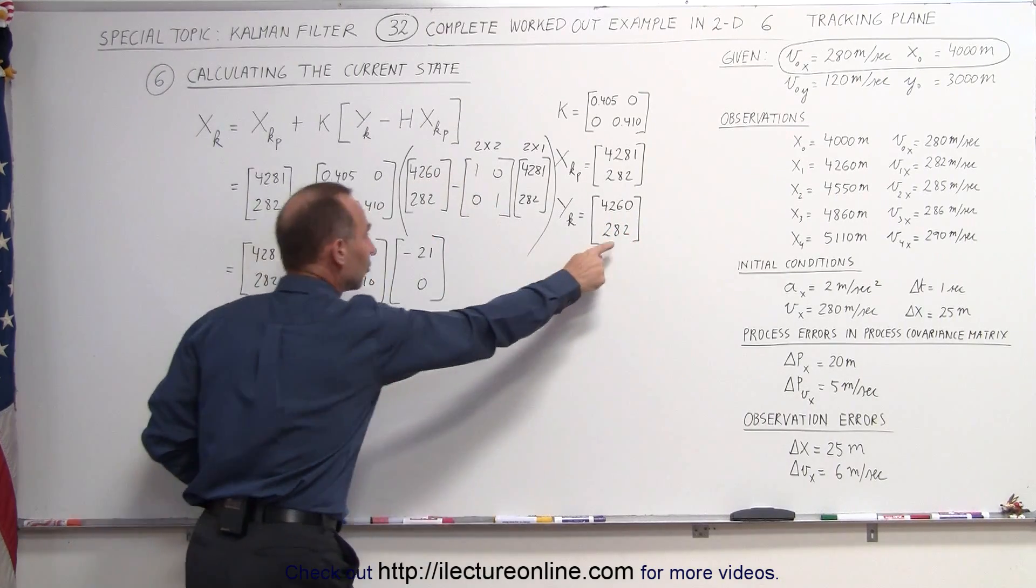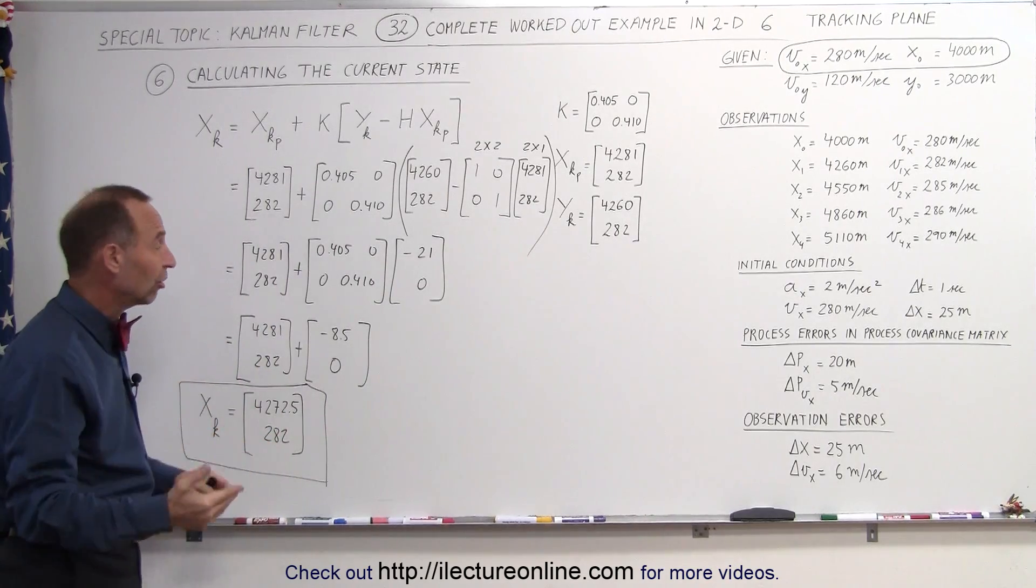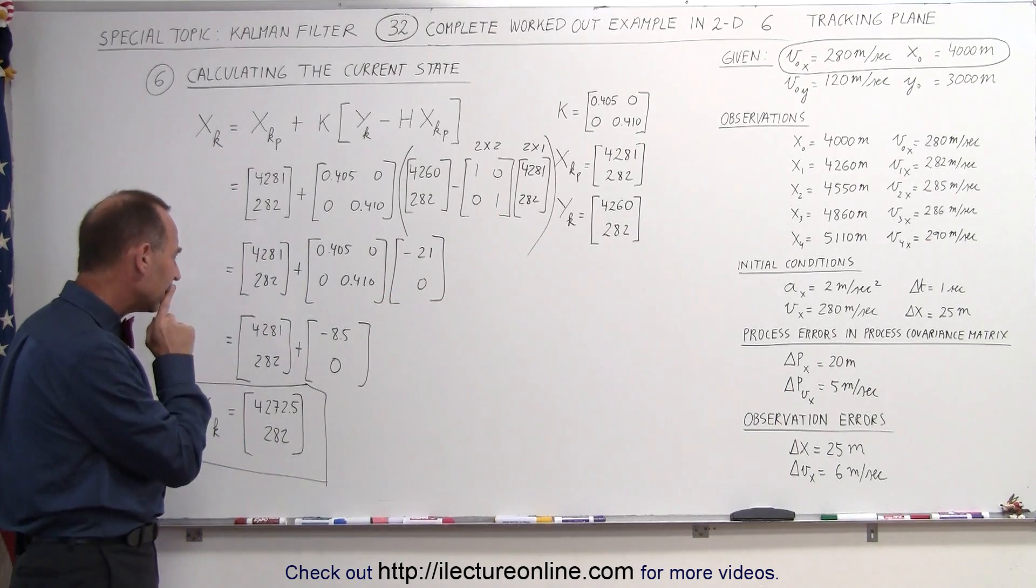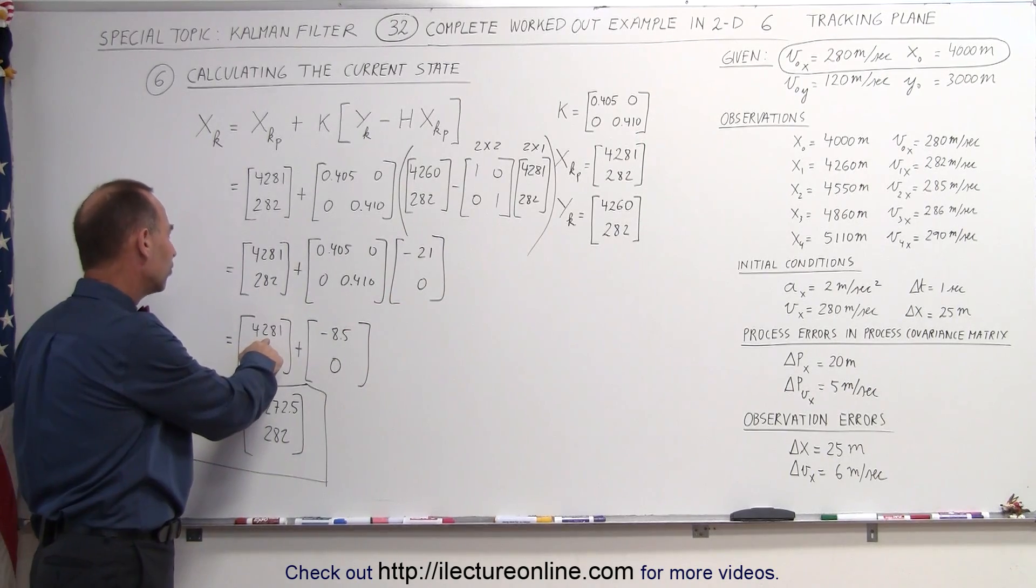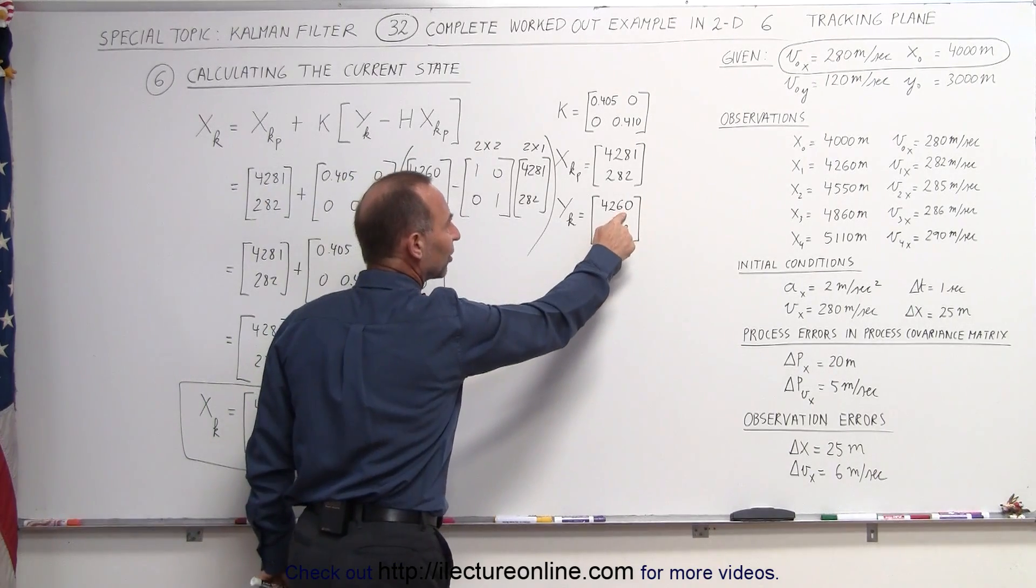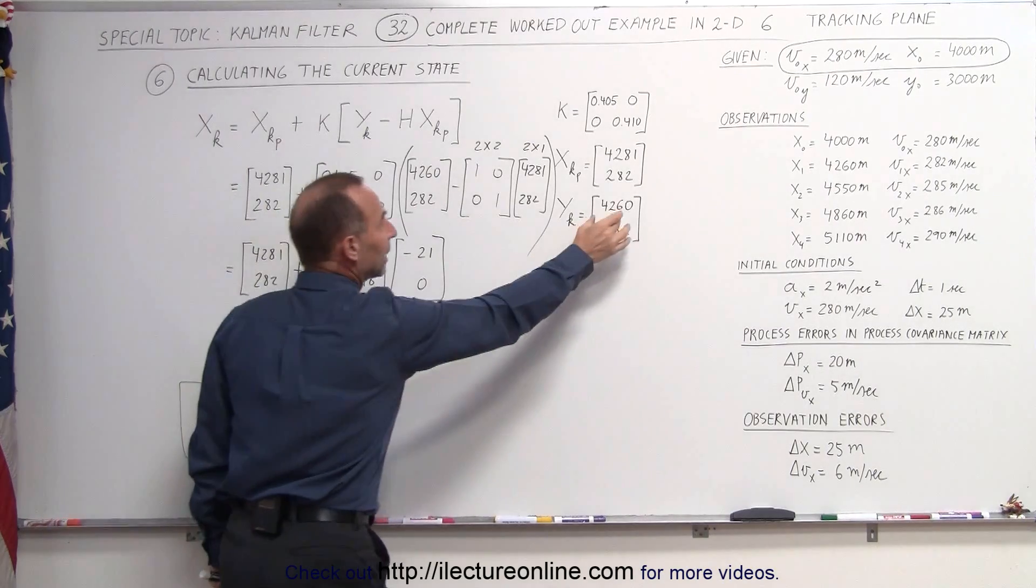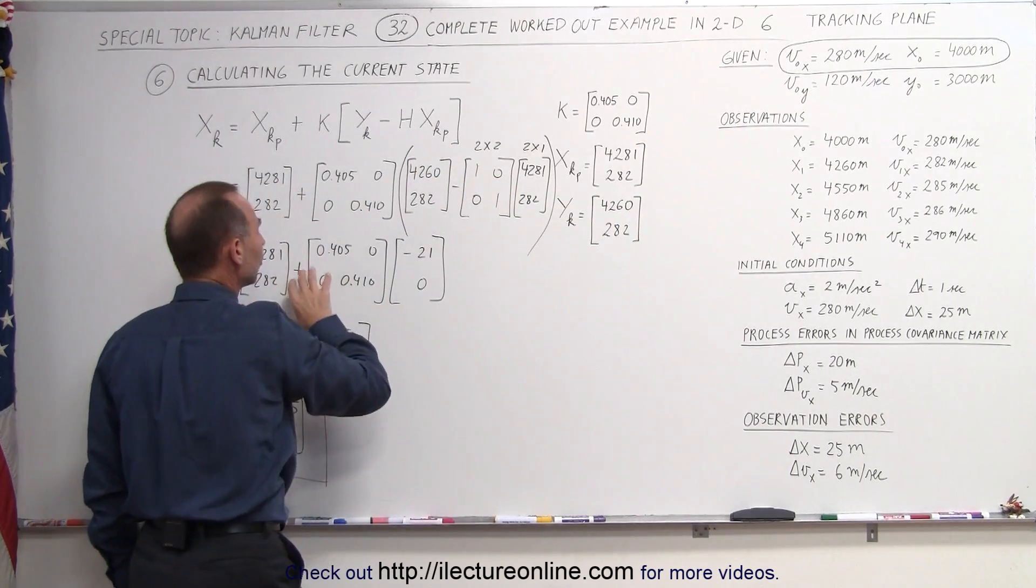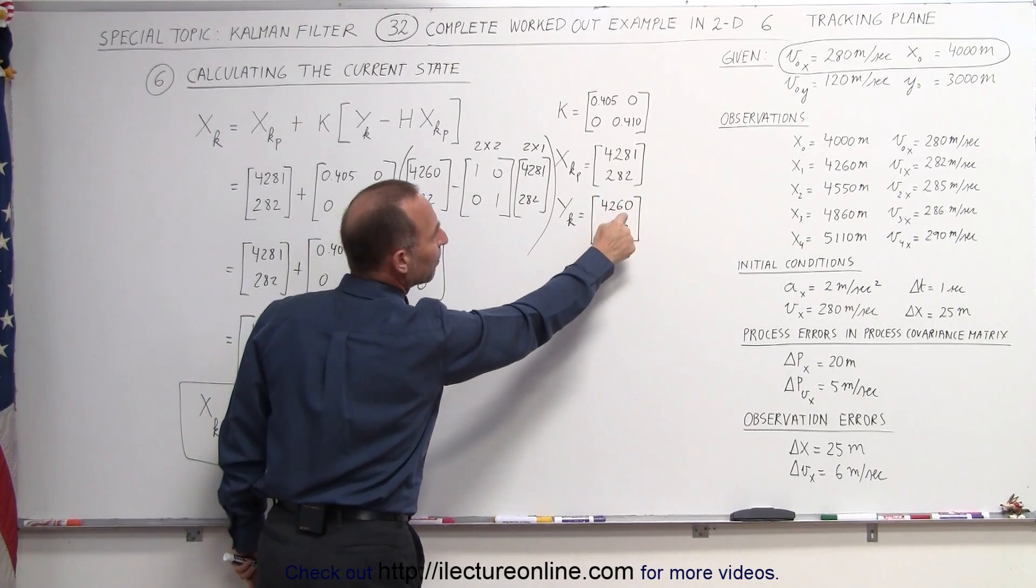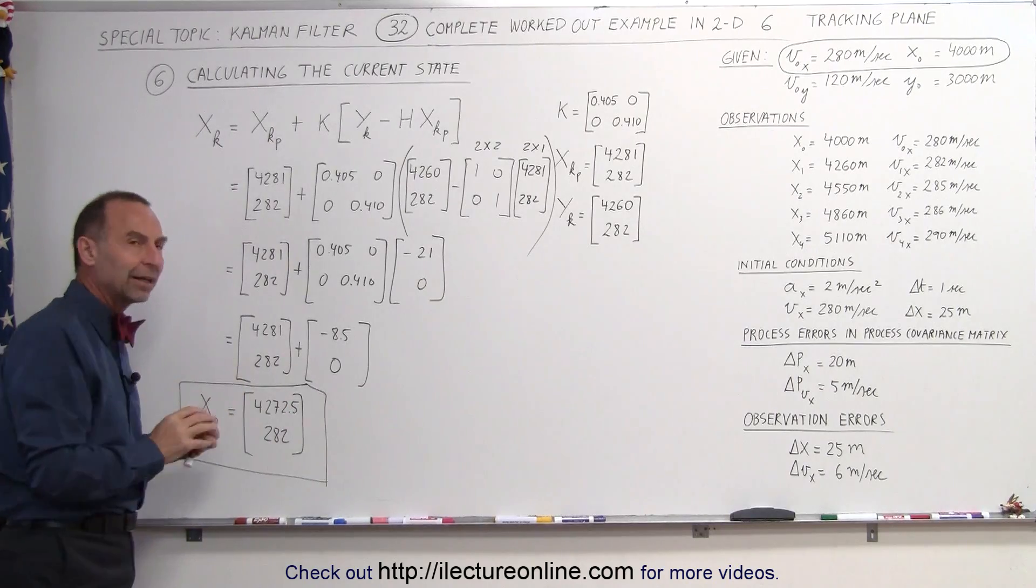Since the velocity of the measured value matched the velocity of the prediction, we did not need to make any adjustments. So the Kalman gain did not make any changes there. But since the predicted value of the position was 4,281 and the measured value of the position was 4,260, we didn't want to believe this completely. The Kalman gain tells us how much faith we have in the measured value and how much faith we have in the predicted value.